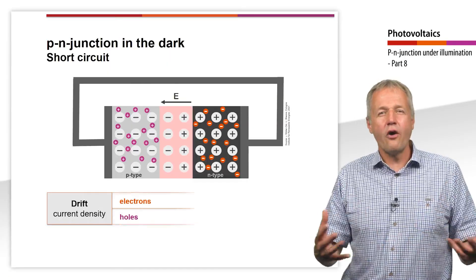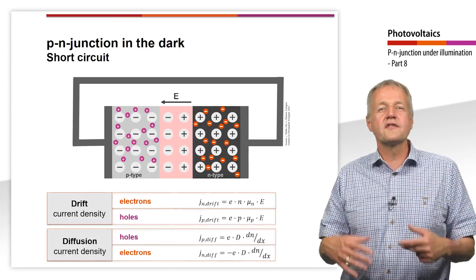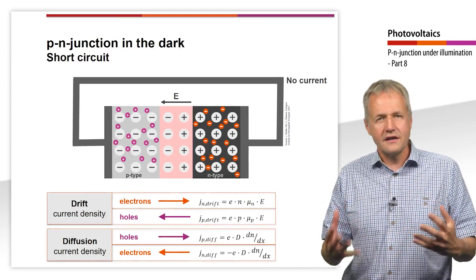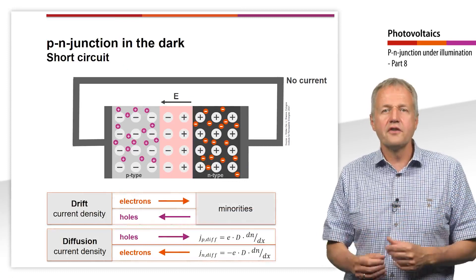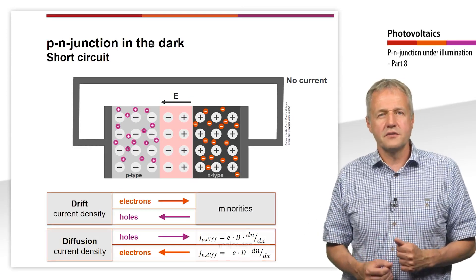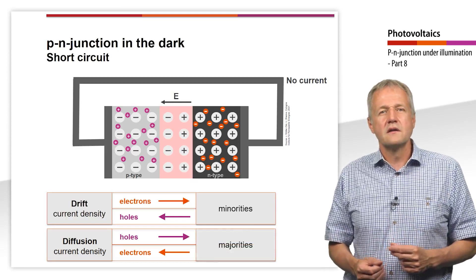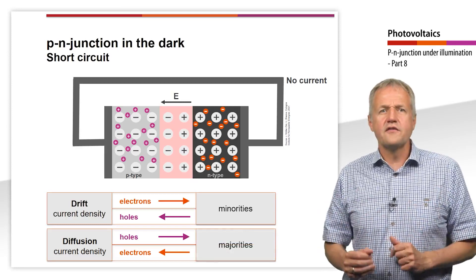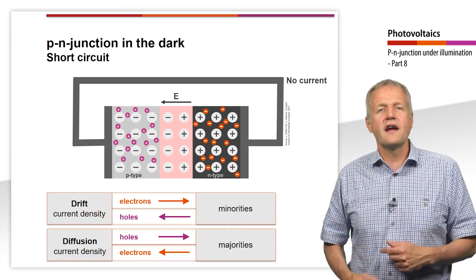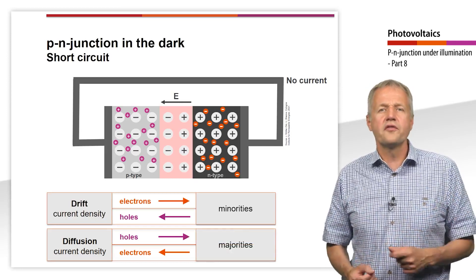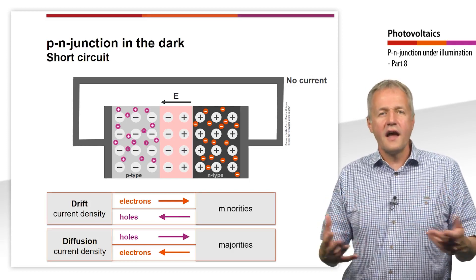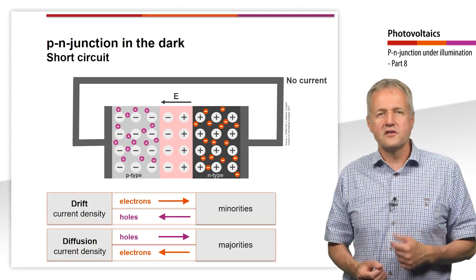We recall that the drift current moves the minorities in both regions — that is, the electrons in the p-region and the holes in the n-region. It counteracts the diffusion current. The diffusion current, on the other hand, moves the majorities: the electrons in the n-region and the holes in the p-region.